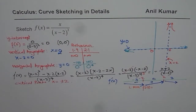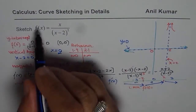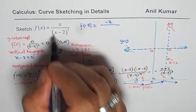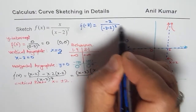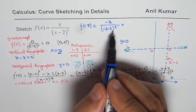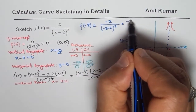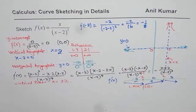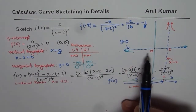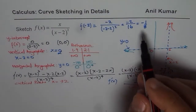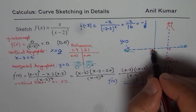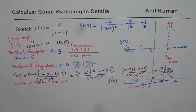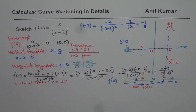We find the value of the function at the local minimum. f(-2) = -2 / (-2 - 2)² = -2 / (-4)² = -2 / 16 = -1/8. So the local minimum is at (-2, -1/8). We can plot this point on our graph approximately at x = -2.